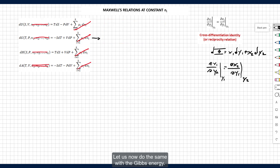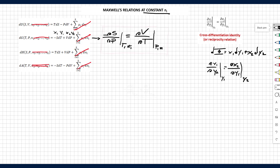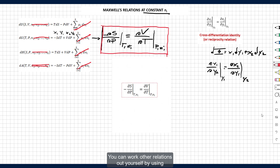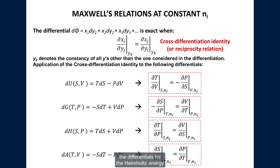Let us now do the same with the Gibbs energy. We apply the cross differentiation identity to obtain a second Maxwell relation, which this time is between entropy and volume. You can work out other relations yourself by using the differentials for the Helmholtz energy and for the enthalpy — take a moment to do it.